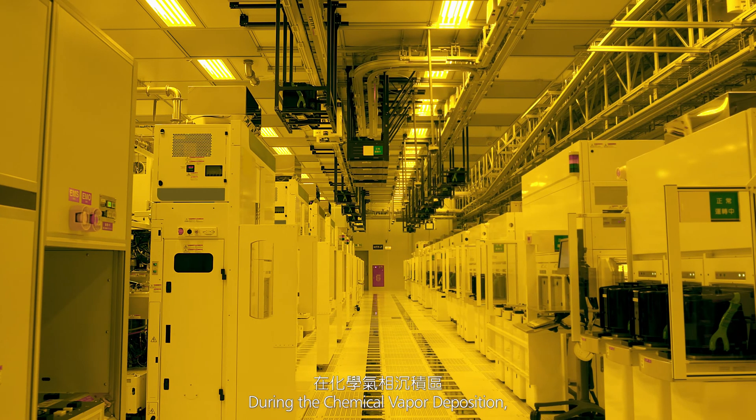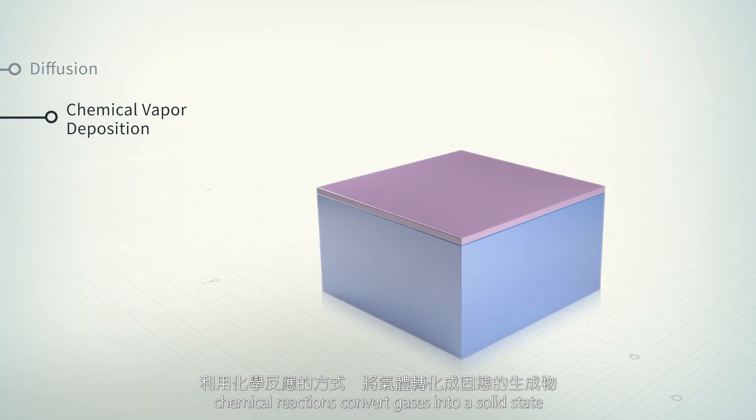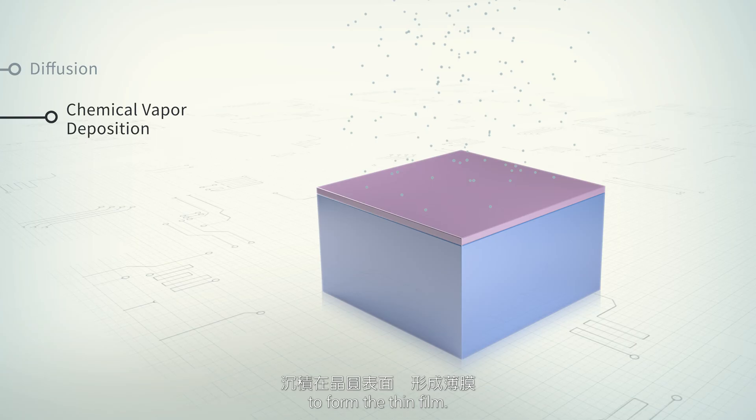During the chemical vapor deposition, chemical reactions convert gases into a solid state to form the thin film.